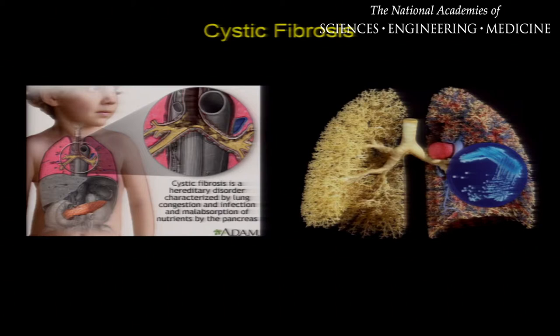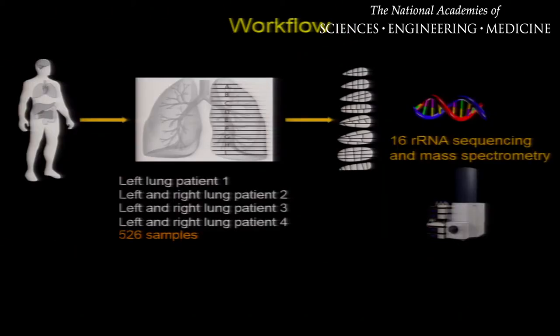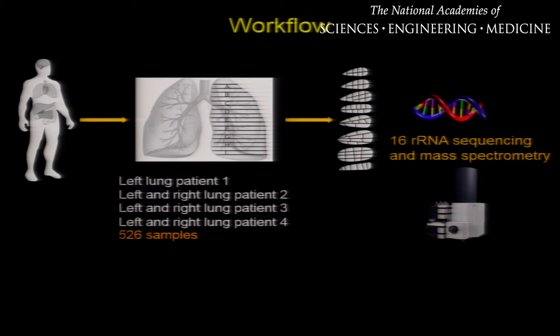In order to ask these questions, we needed human lungs infected with pathogens of cystic fibrosis. Patients with CF have multiple infections throughout their lifespan, so their lungs are damaged and they are often listed for organ transplant. When they undergo organ transplant, we take the lungs, slice them into thin slices, and further section each slice into small cubes. We acquire 16S rRNA sequencing and mass spectrometry data on each of these cubes.